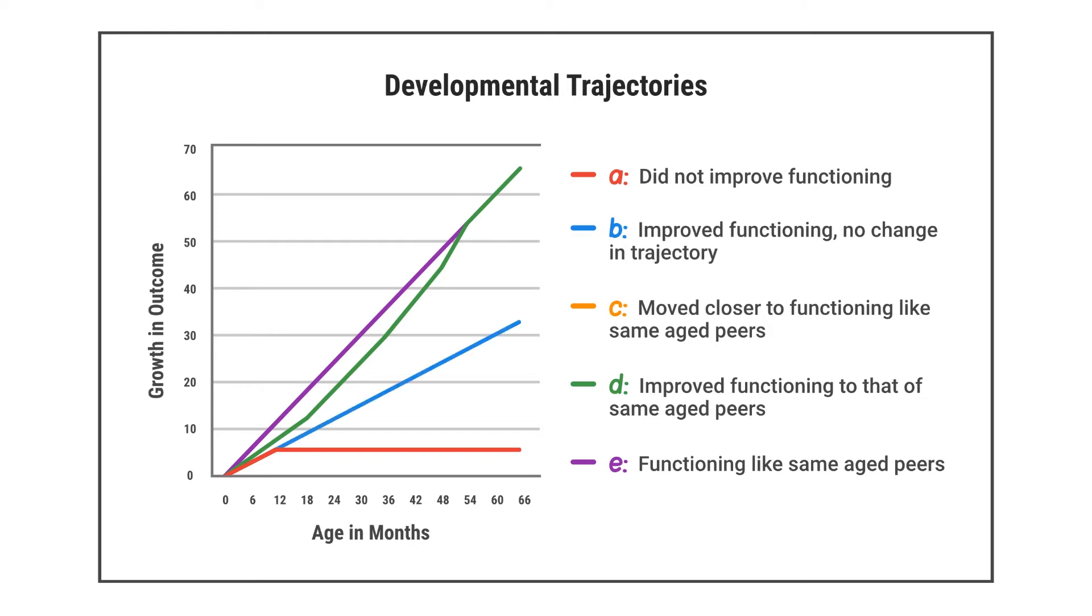Both the blue and orange lines illustrate the growth of children who were not functioning like same-age peers when they entered the program. The orange line shows children who begin to acquire skills at a faster rate after entering the program at around 24 months. The blue line represents children who continue to acquire new skills at the same rate after they enter the program.